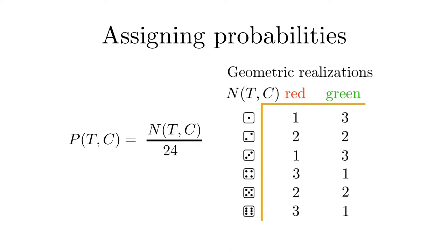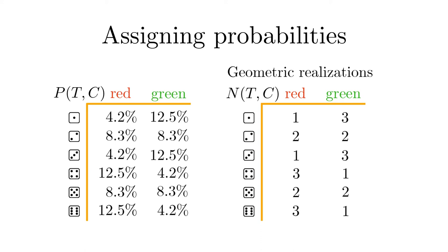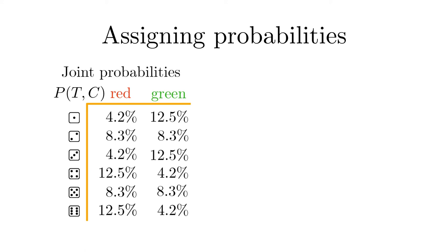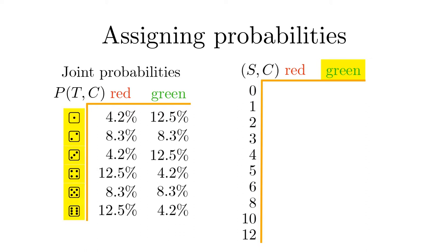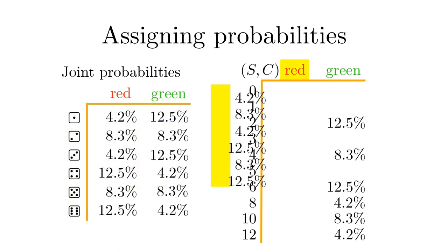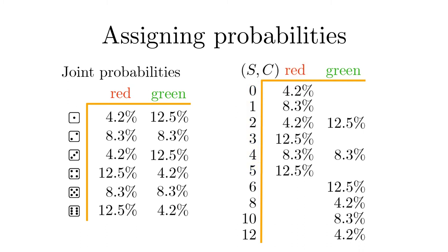The probability for the pair is therefore three divided by twenty-four, resulting in twelve point five percent. That leads to the following table of joint probabilities. From the table of joint probabilities for the feature pairs, we can easily construct another representation, namely the pair score and front color. If the front color is green, the score is obtained by multiplying the top pips by two. Likewise, if the front color is red, the score is obtained by reducing the top pips by one. These tables represent different joint probabilities.